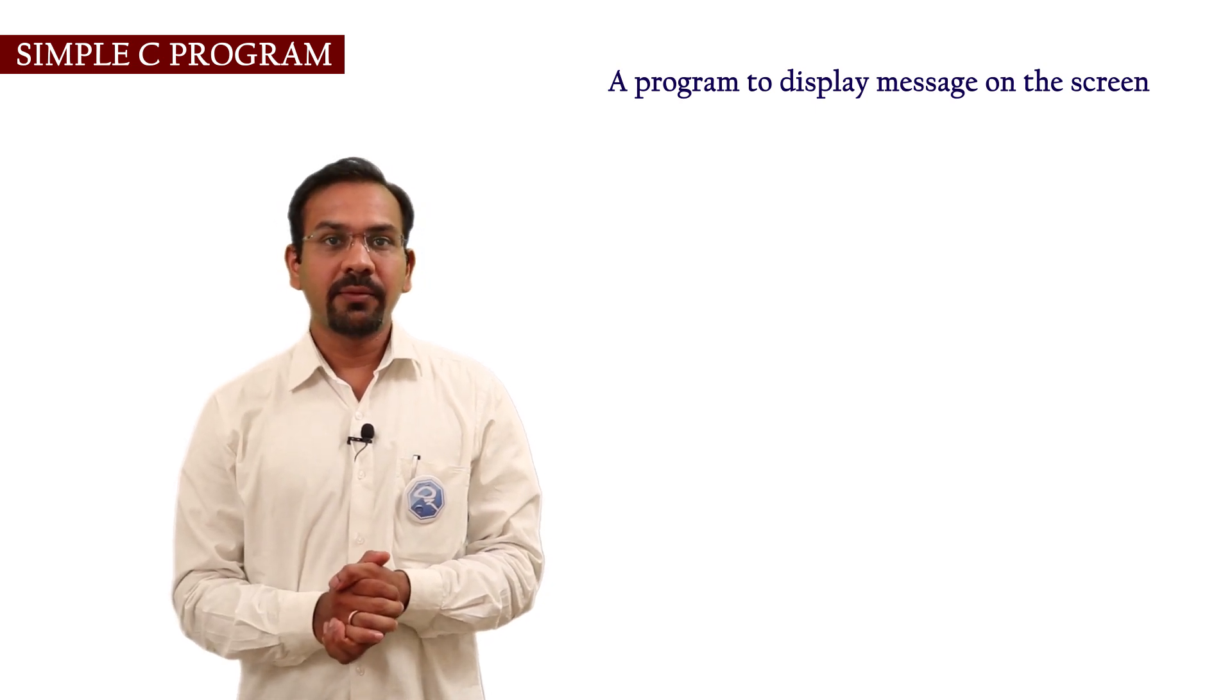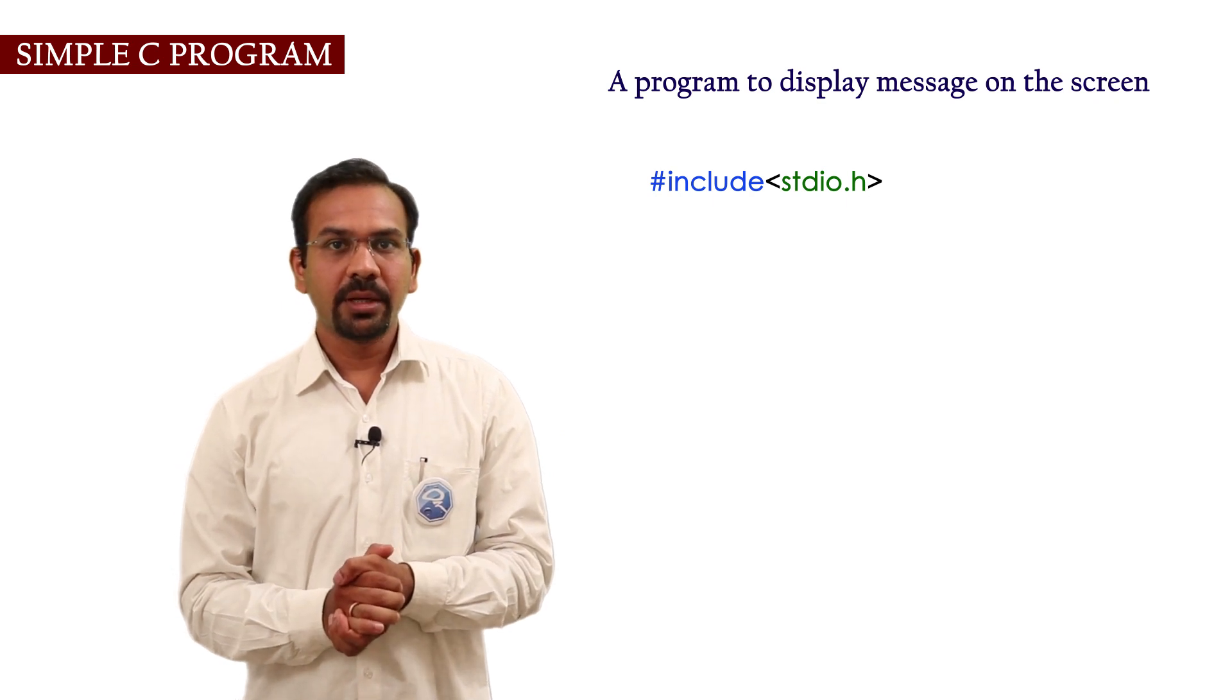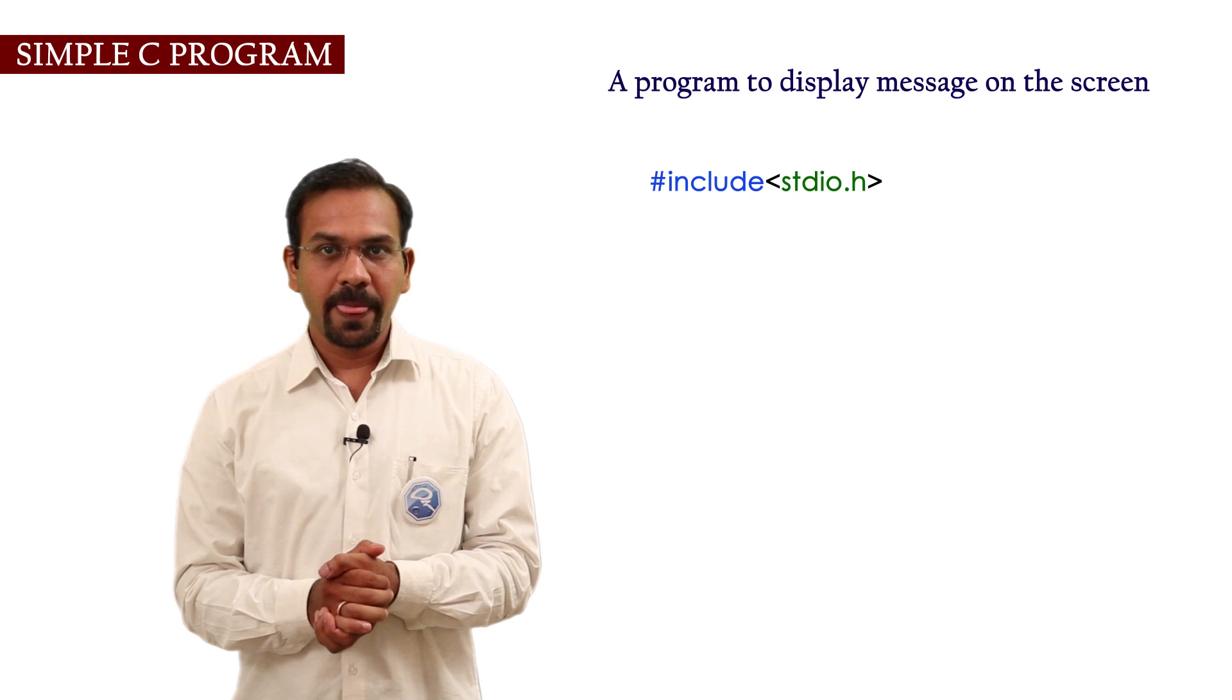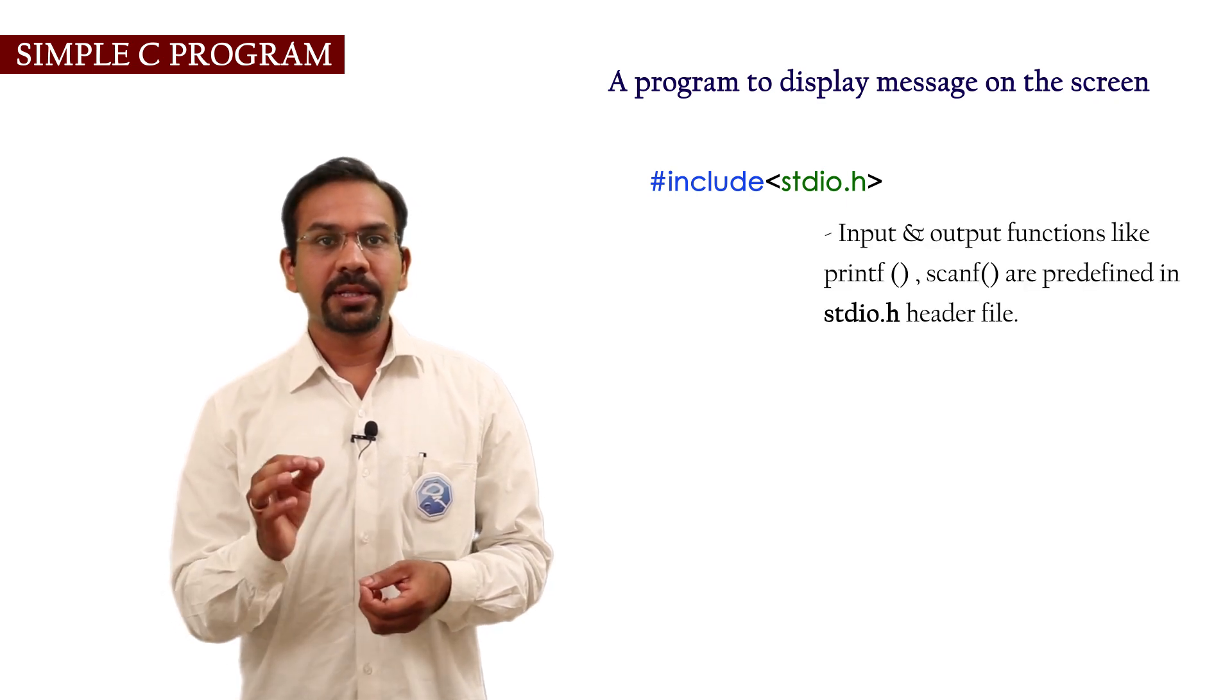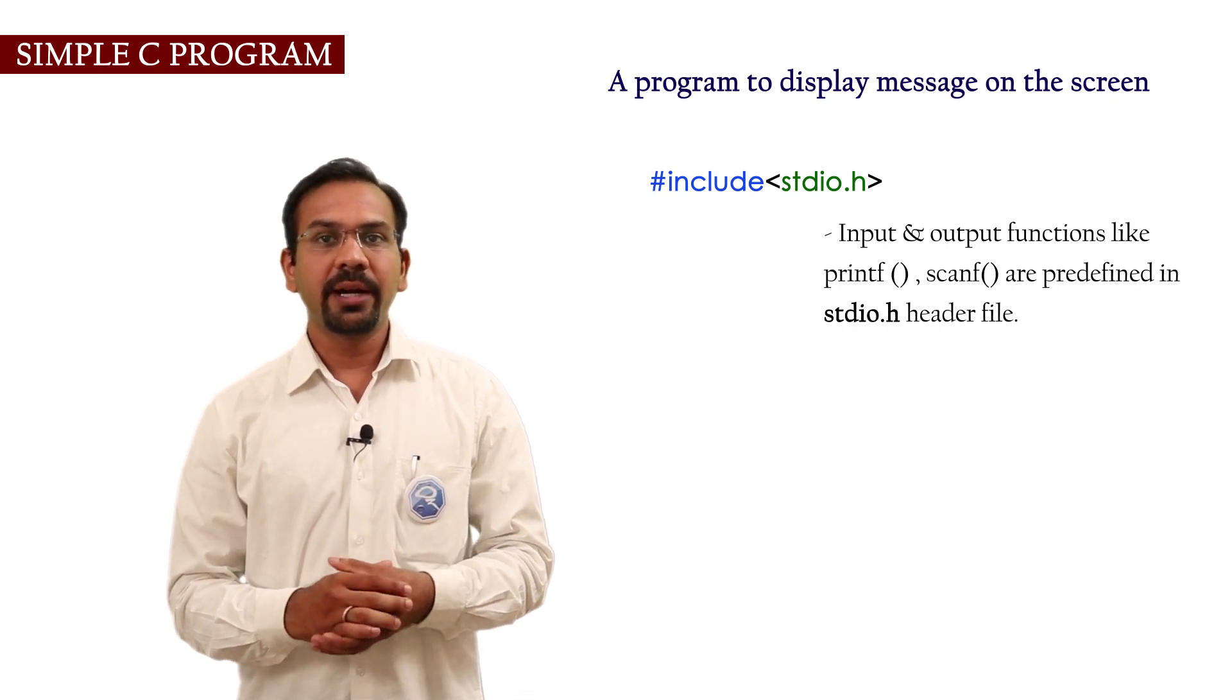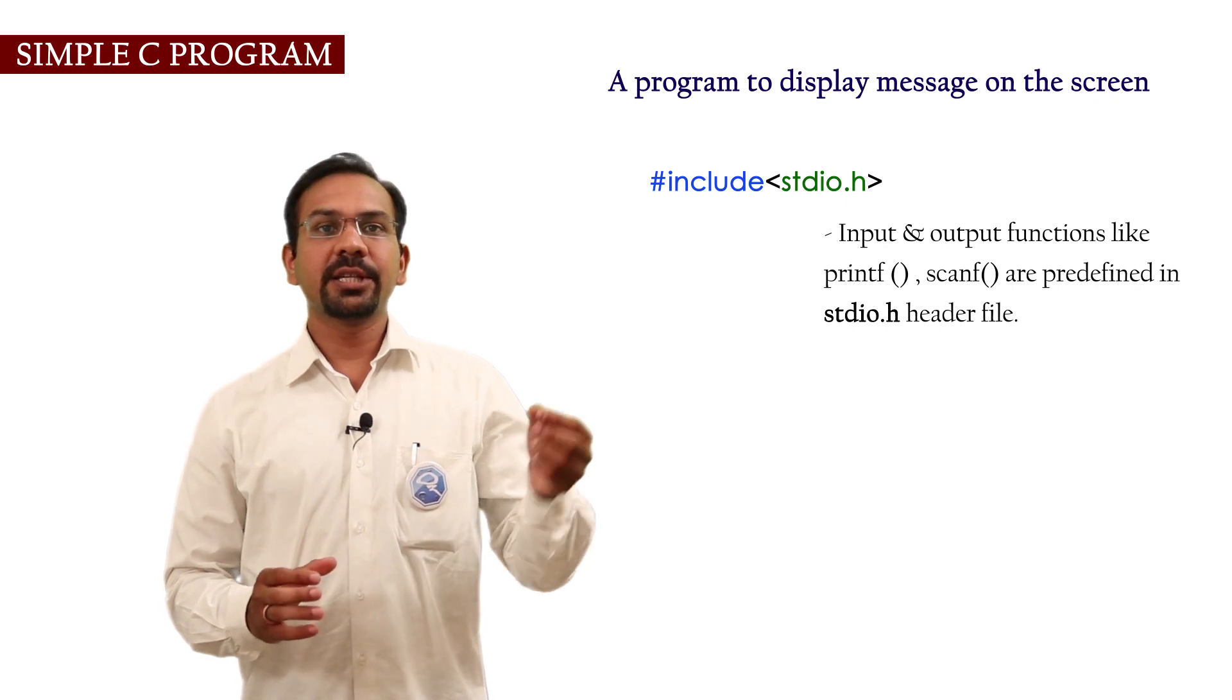We start with a header file #include stdio.h. Here we are including the header file stdio.h. This file is for standard input output. Header files are included to use predefined functions in a program. This is written in link section.